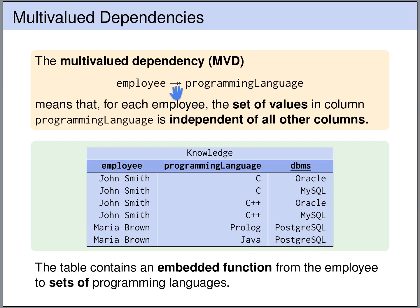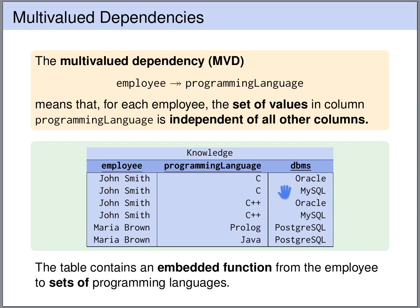We denote multivalued dependencies using a double arrow to differentiate them from functional dependencies, which use a single arrow. So here we have a multivalued dependency from employee to programming language. You can think of this as: the employee uniquely determines a set of programming languages, and the set of programming languages is independent of all the other columns. So for John Smith, the set of programming languages is C and C++, and this set is independent of the database management system — no matter what DBMS we look at for John Smith, we see the same set of programming languages. You can think of this as an embedded function from an employee name to a set of programming languages.